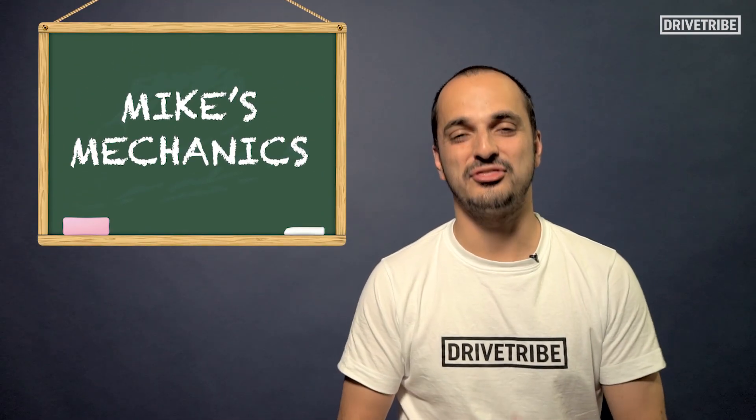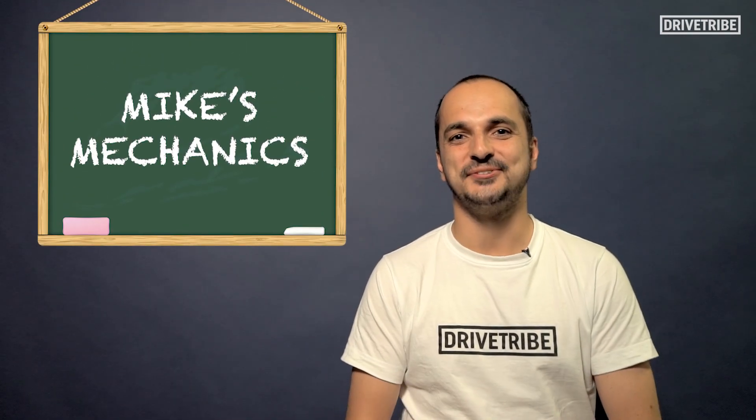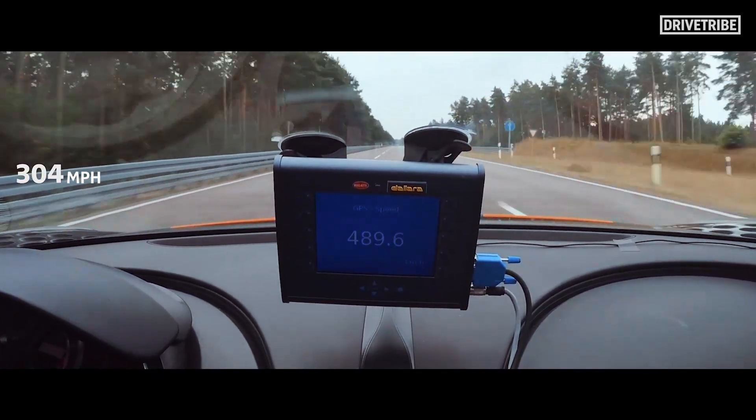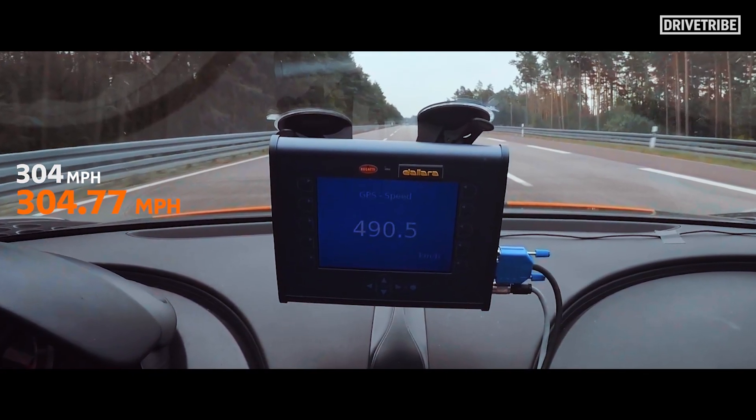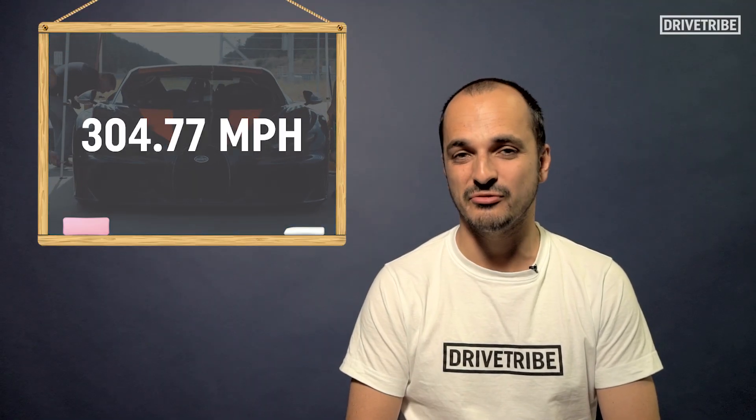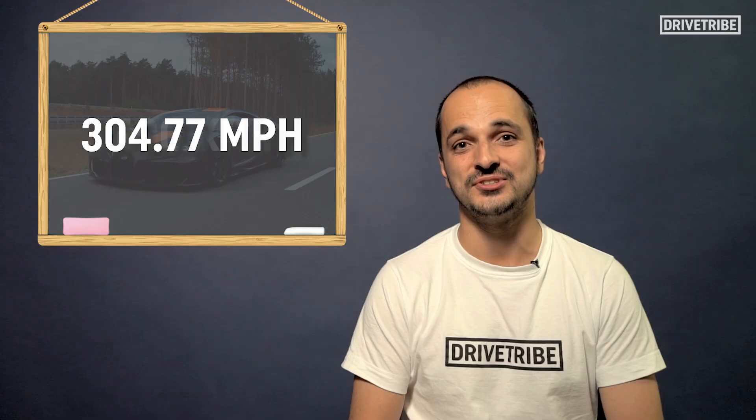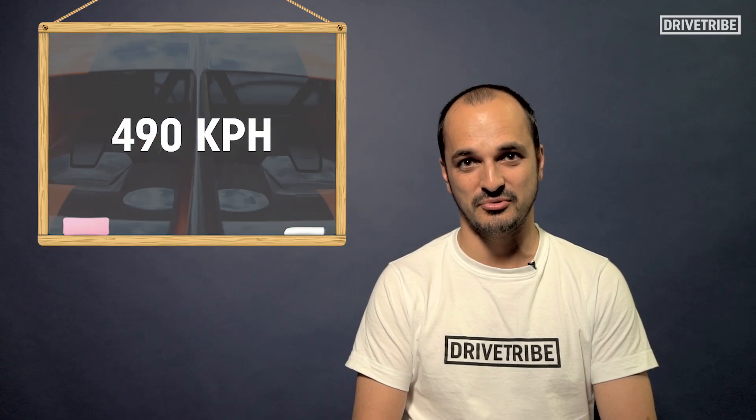Bugatti has done it. The 300 mile an hour barrier has been smashed. Racing driver legend Andy Wallace has taken a modified Chiron all the way to 304.77 miles per hour, or for you metric folks, 490 kilometers per hour.